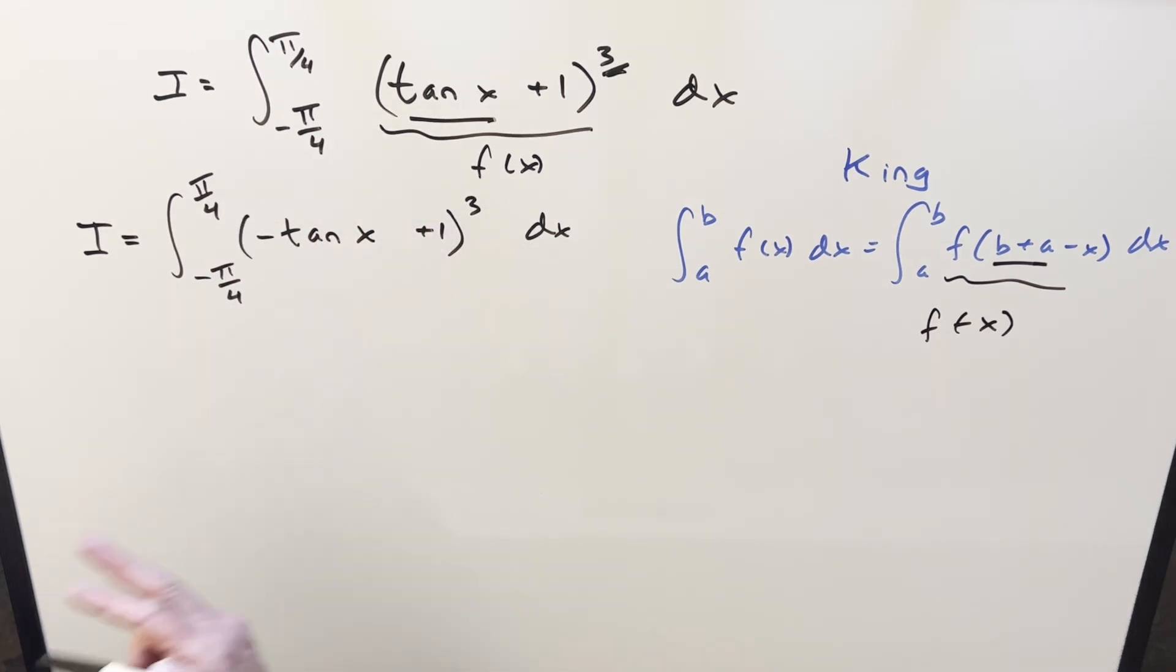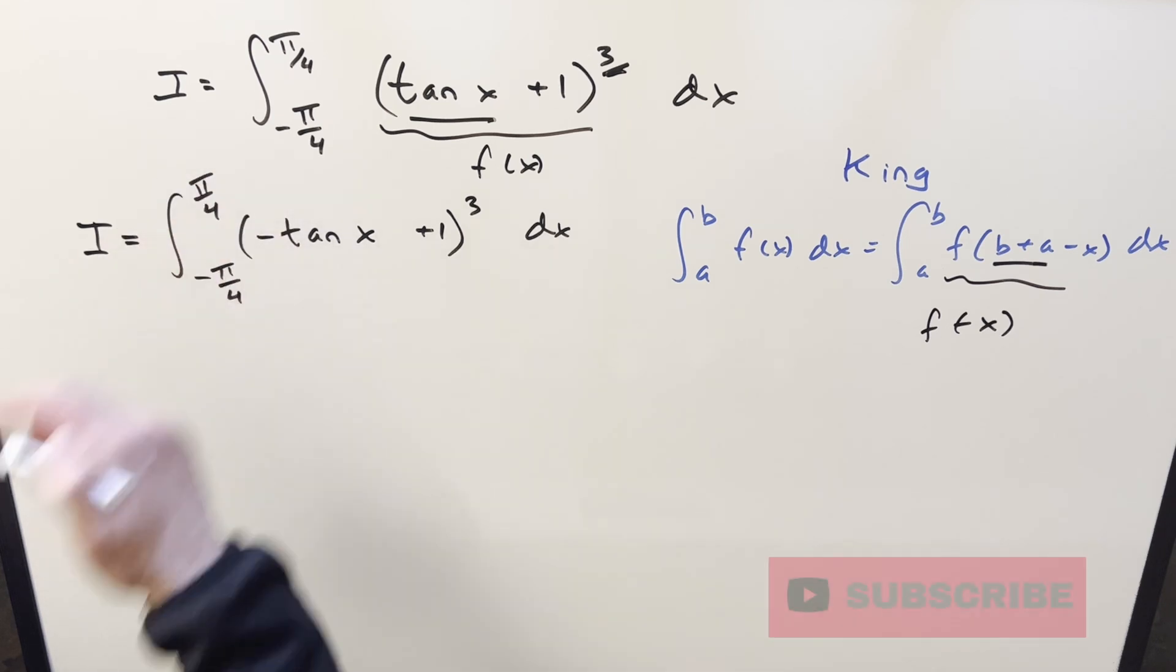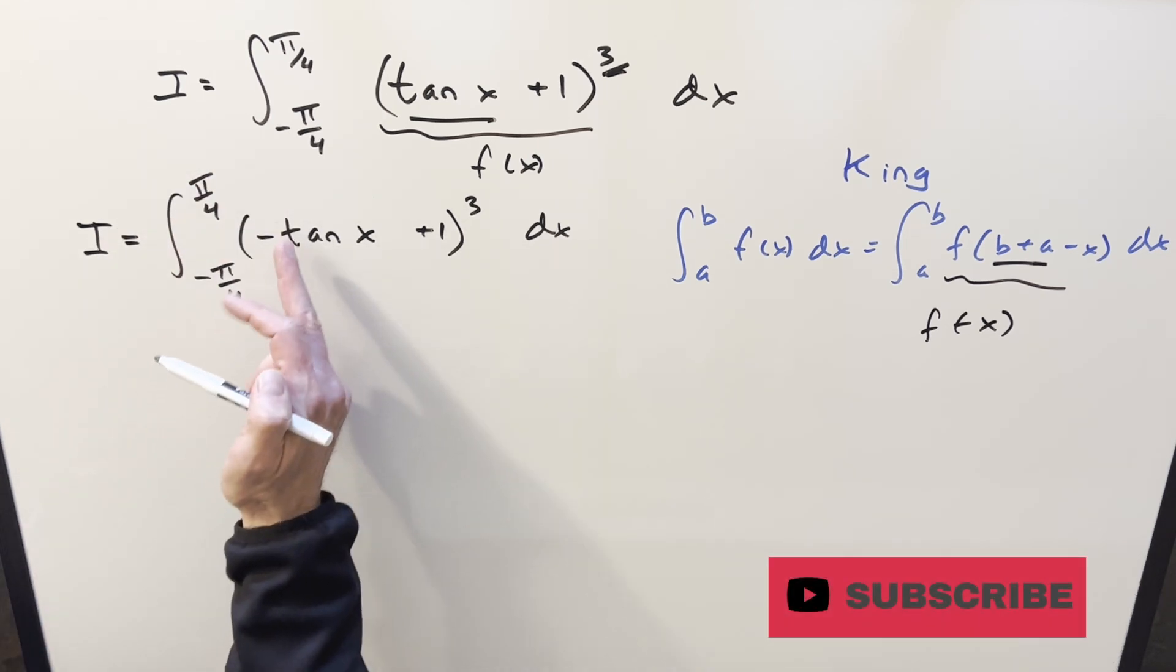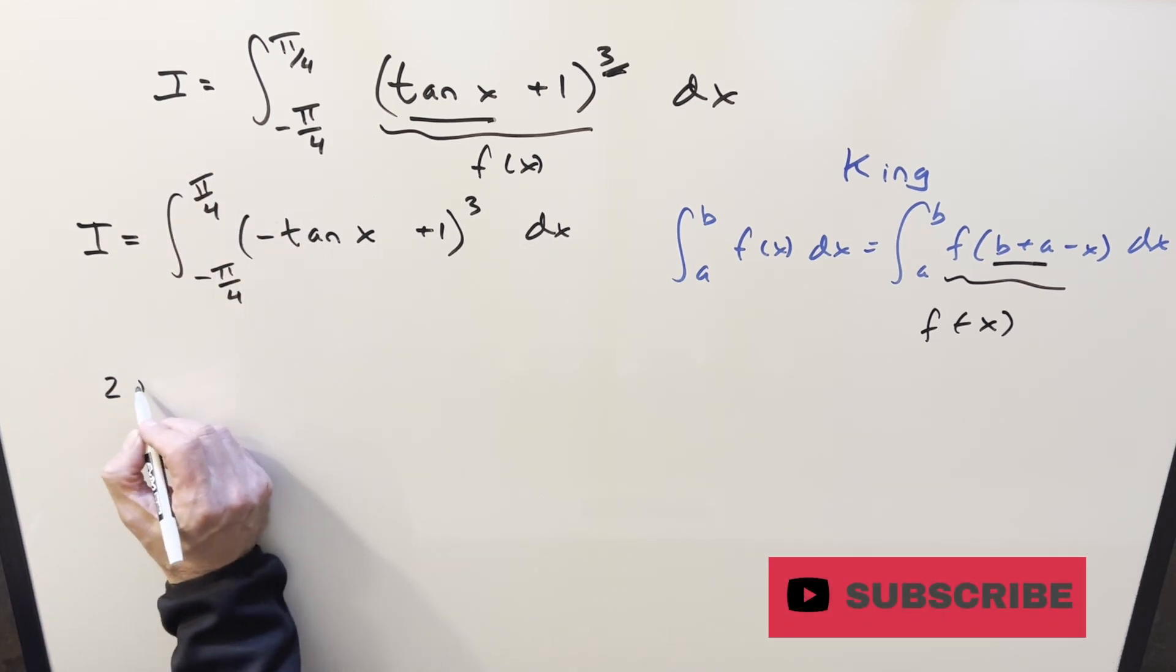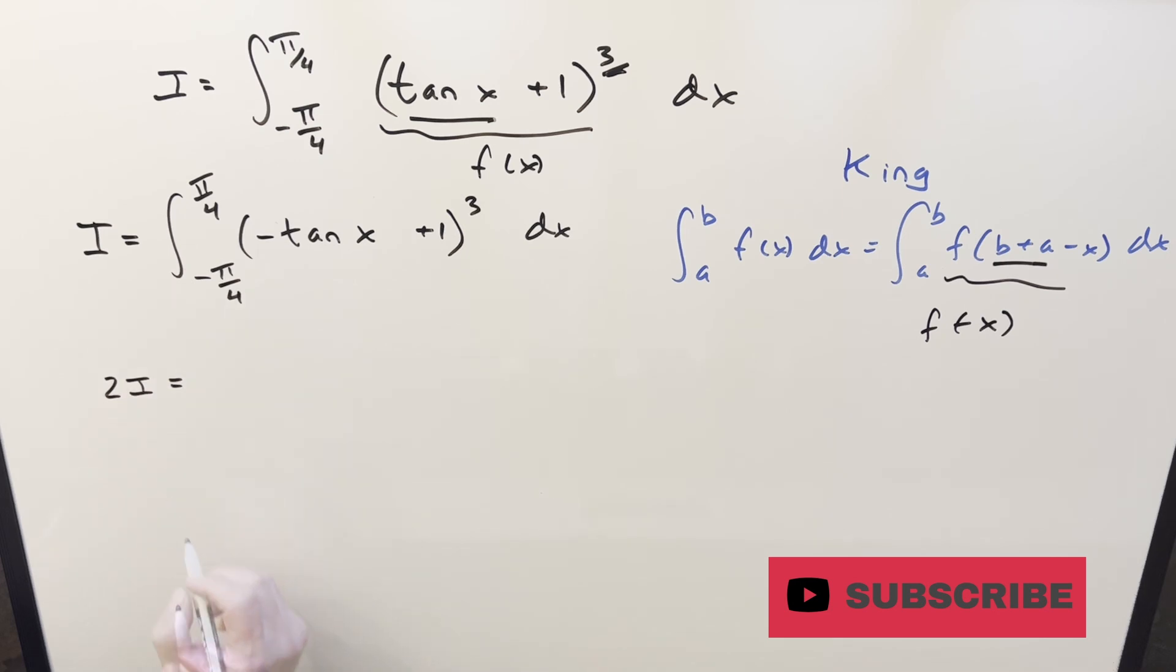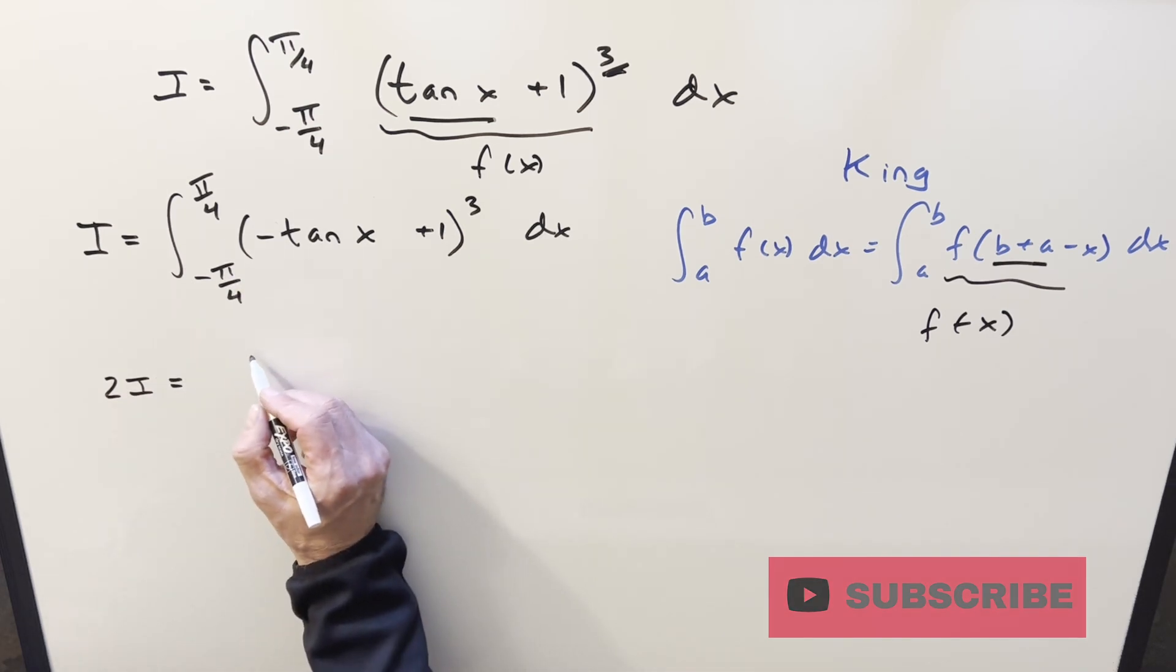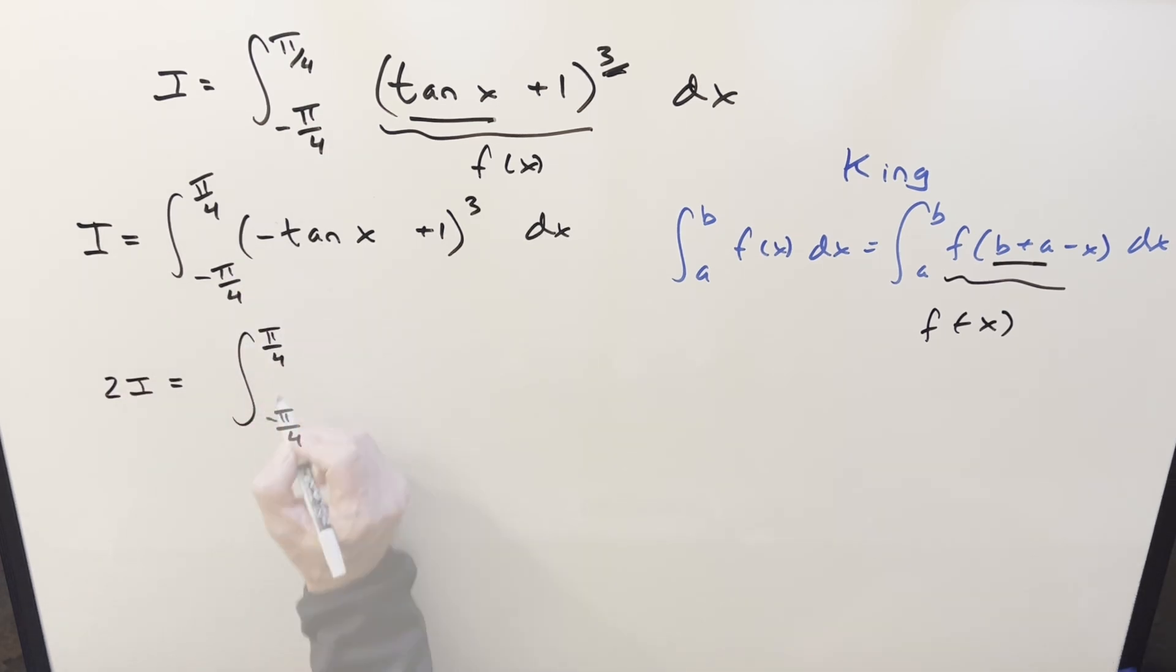And from here I'll do what works a lot with King's principle, is just adding the two together. So when we add these two integrals together, we're going to have two copies or 2I. The bounds are the same, so that part's fine. But now before I add these two together, I'm going to want to expand it out to see what cancellation we get.